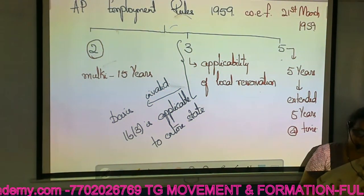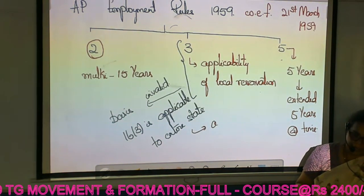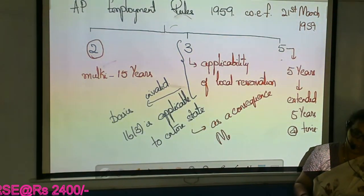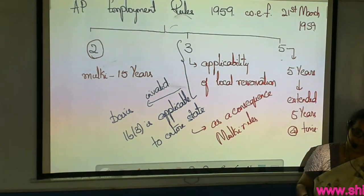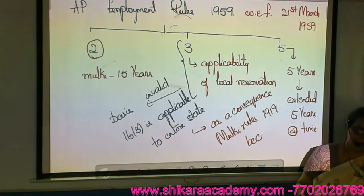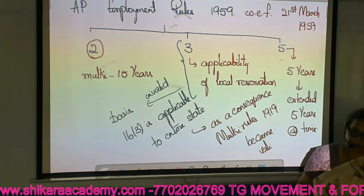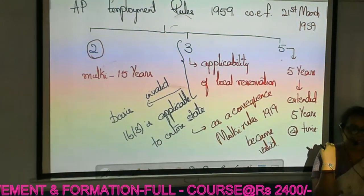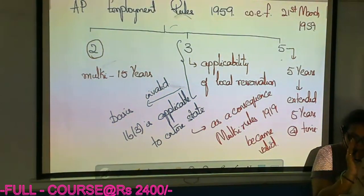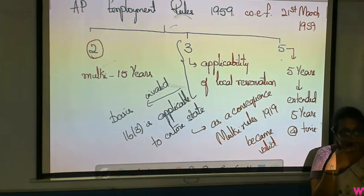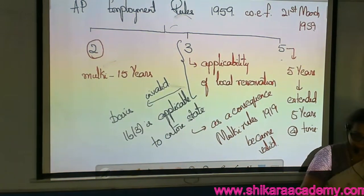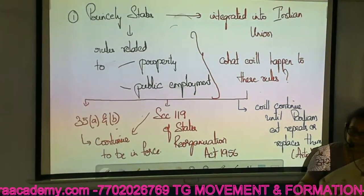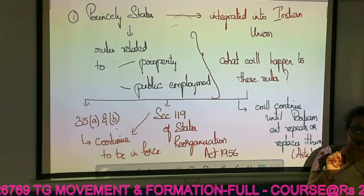Once Section 3 becomes invalid, automatically as a consequence, the old 1919 Mulki rules become valid. Why? Because the law in which Parliament said it is replacing the old Mulki rules has been declared invalid by the Supreme Court. When that law becomes invalid, the previous law made by the Nizam will become valid — because Article 35B very clearly says it will continue, and Article 372 says until Parliament repeals it, it will continue.